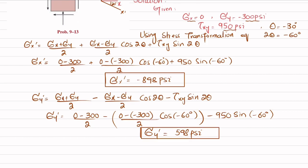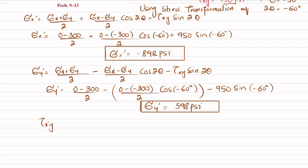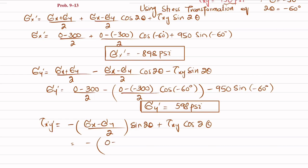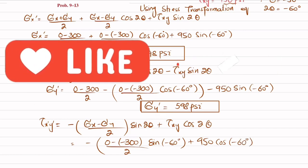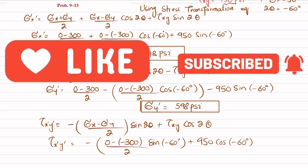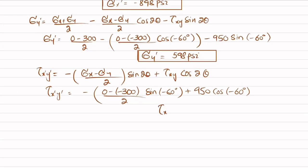Now we will find tau x'y'. The formula is: tau x'y' = −(sigma x − sigma y)/2 · sin(2θ) + tau_xy · cos(2θ). Putting in the values: −(0 − (−300))/2 · sin(−60°) + 950 · cos(−60°). When you calculate it, tau x'y' comes out to be 605 psi.